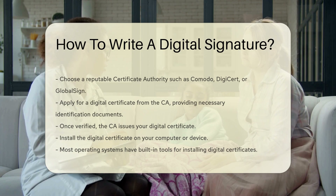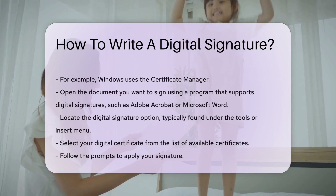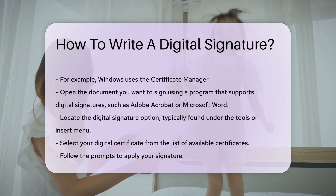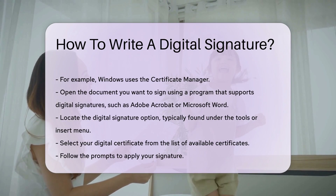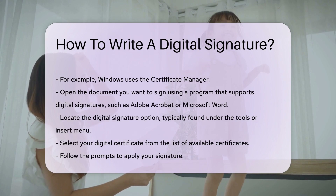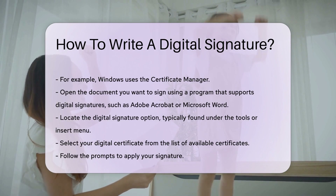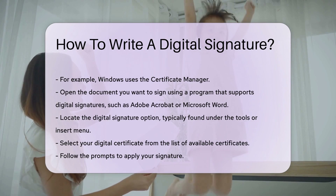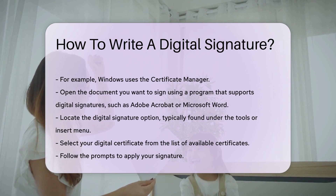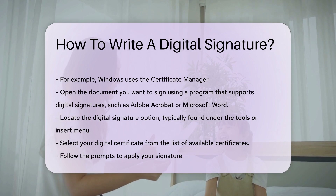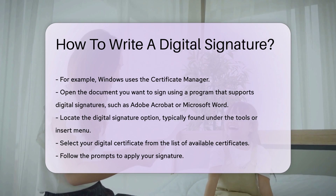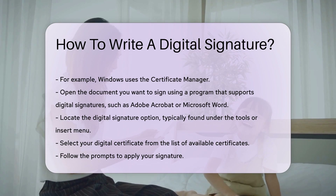Now, open the document you want to sign. Use a program that supports digital signatures — examples include Adobe Acrobat and Microsoft Word. In the program, locate the digital signature option, typically found under the Tools or Insert menu.